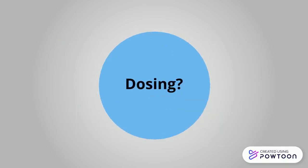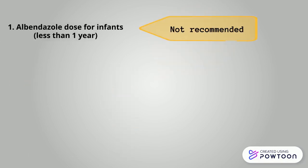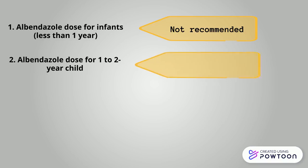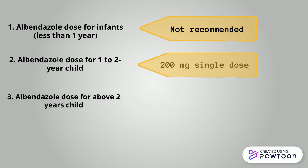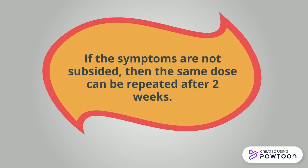Now moving to the dosing section, which is a very important part of this video. What would be the Albendazole dose for a child? For infants, it is generally not recommended because there is a lack of safety data in this age group. If your child's age is 1–2 years old, then Albendazole 200mg single dose is sufficient. If your child's age is more than 2 years old, then Albendazole 400mg single dose is recommended. If the symptoms of worms are not resolving, the same dose can be repeated after 14 days.